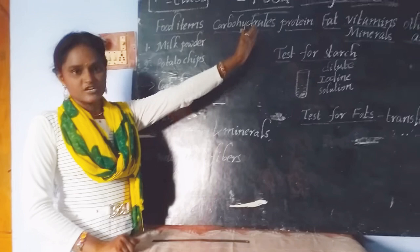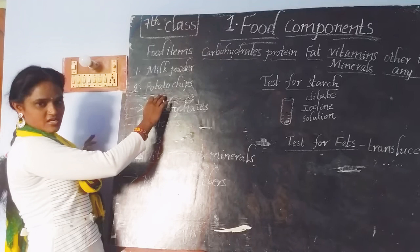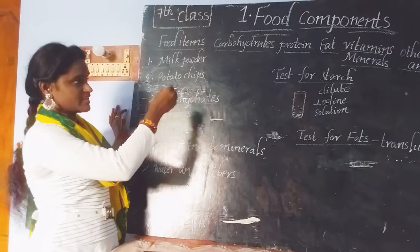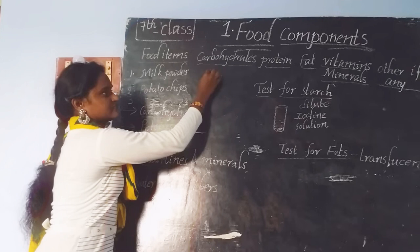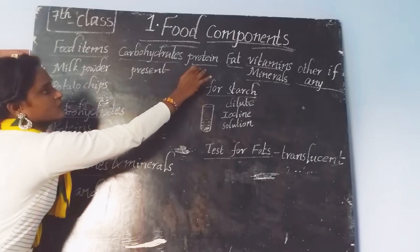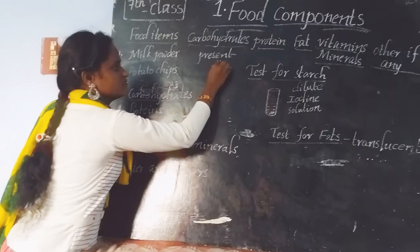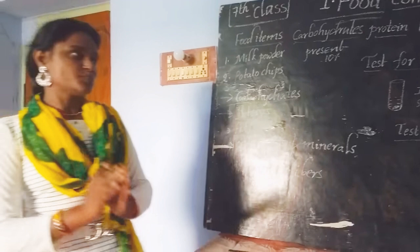Write down this tabular form and try to fill it in your notes. You may add many examples — for instance, milk powder and potato chips. By looking at the packet, if carbohydrates are present you write 'present' and note the amount, for example 10%. Fill this tabular form for all the components listed. Now we are going to discuss about the first experiment in this lesson — the test for starch.